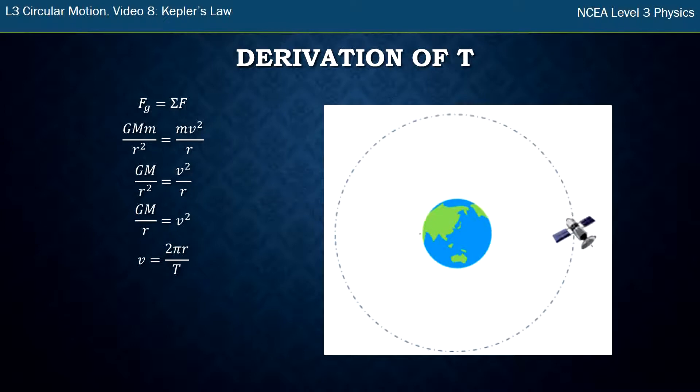I'm going to substitute that formula for velocity into the equation, and because velocity is squared, that 2πr over T is going to be squared as well. Opening that bracket gives 4π squared r squared over T squared on the right hand side.